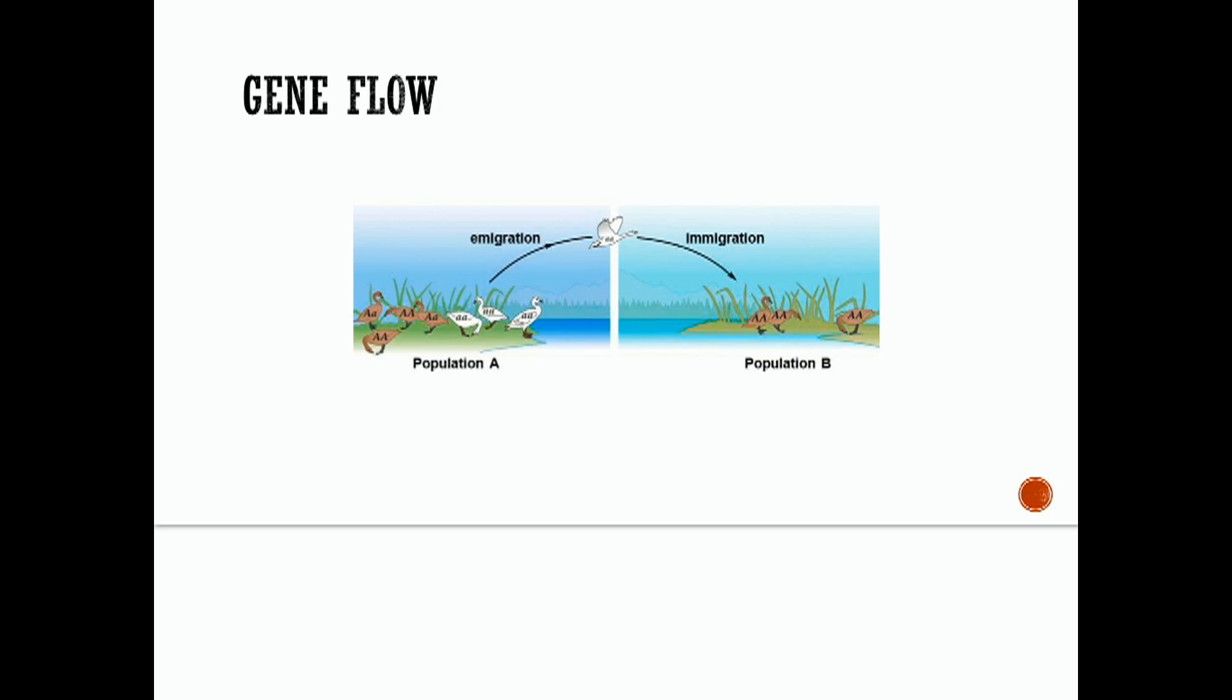Other causes of gene flow are immigration and emigration. Immigration is the movement of individuals into a population or ecosystem. Emigration is the movement of individuals out of a population or ecosystem. The concepts of immigration and emigration are demonstrated in this illustration. The immigration of an individual with two alleles coding for white feathers, looks like it's homozygous recessive, will increase the genetic diversity of population B.